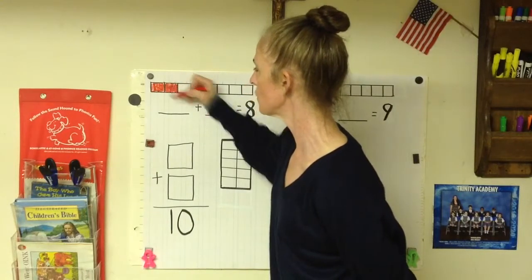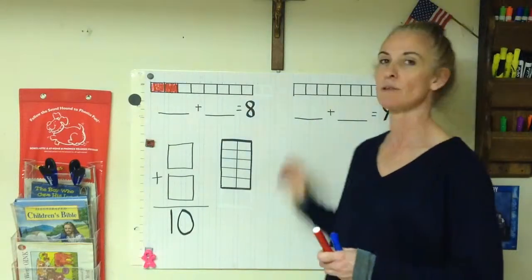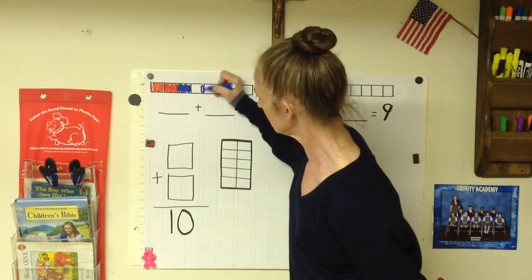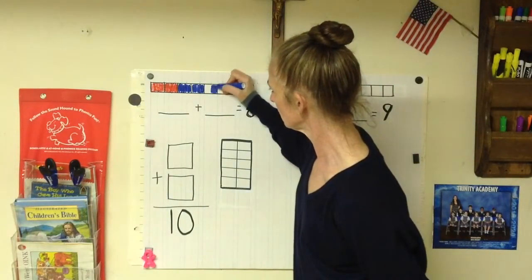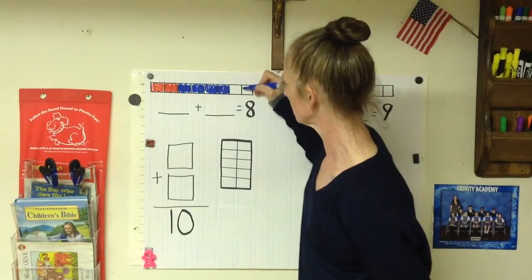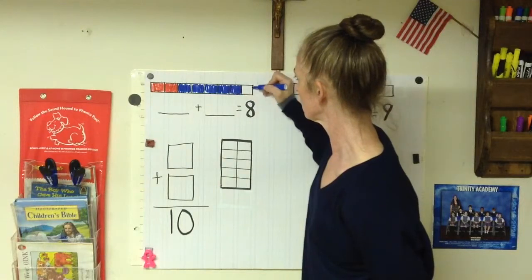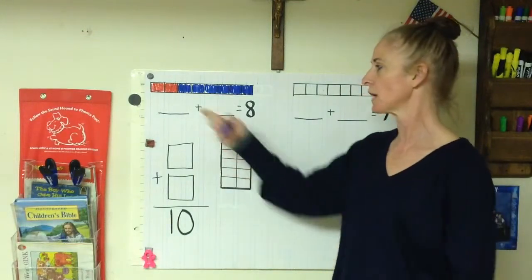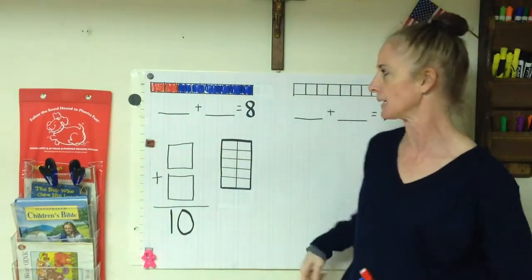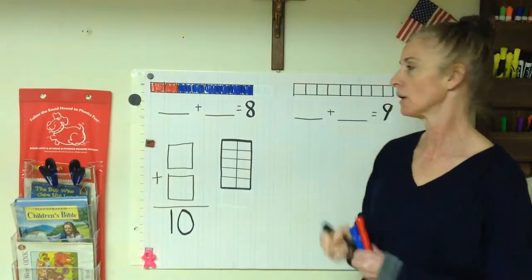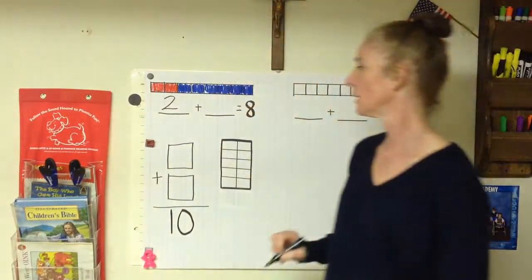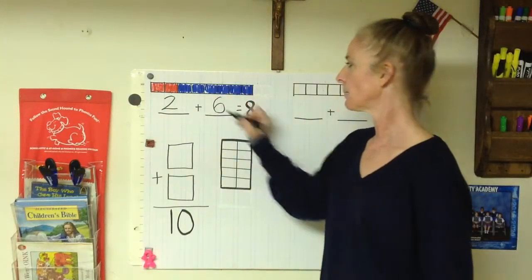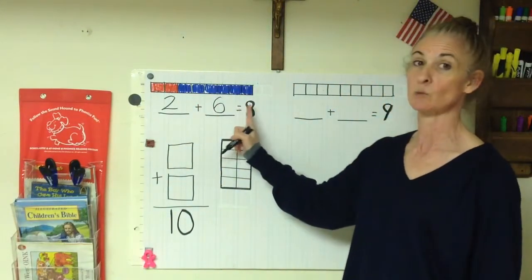So I'll color in two red, and I'm going to color the rest in blue. Okay, my sum is still eight, but I broke it into two groups. And now I'm going to take those two groups and put them in as my addends. So how many reds did I use? Good. Two. So my first addend is two. Plus, let's count how many are blue. One, two, three, four, five, six.